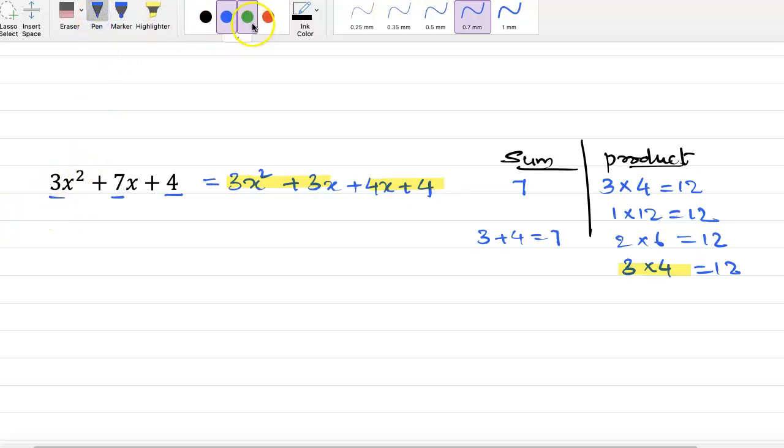The common factor is 3x, so 3x times x plus 1, plus here 4, we can write 4 into x plus 1, which equals x plus 1 into 3x plus 4.